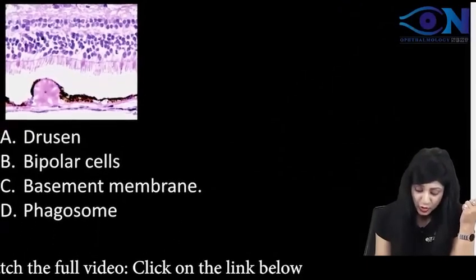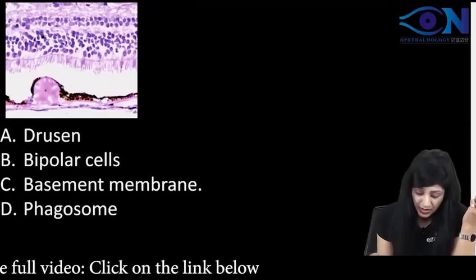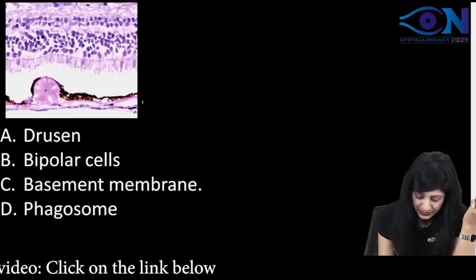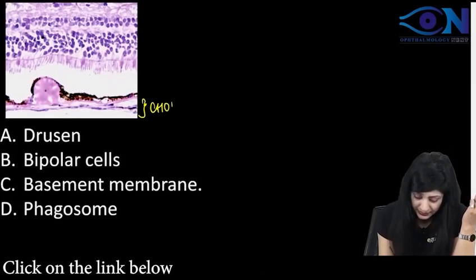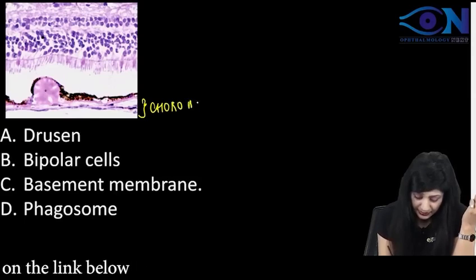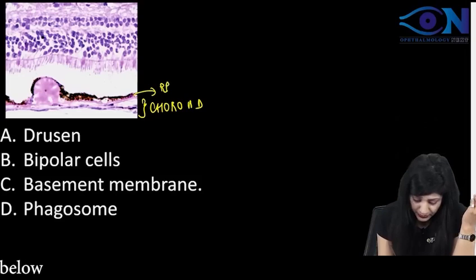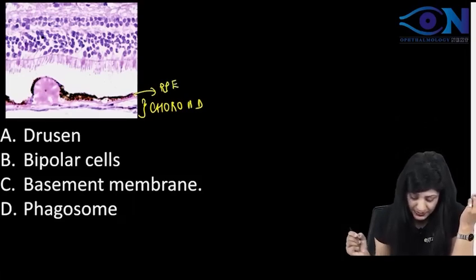So you can see the histology, how can you name it now. You can see these are the chorocapillaries that is there and you can see this darkly pigmented RPE layer, darkly pigmented RPE layer.